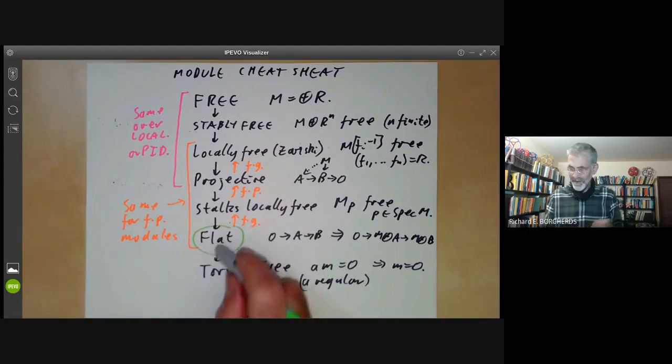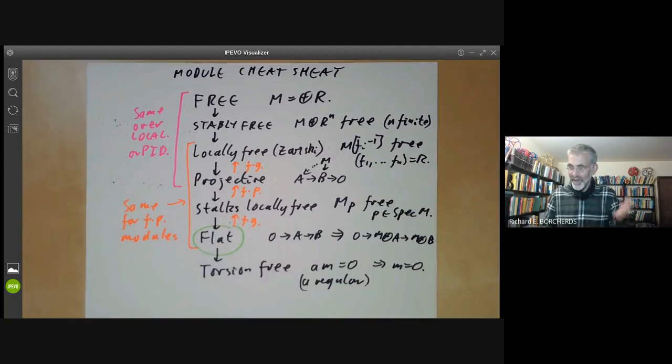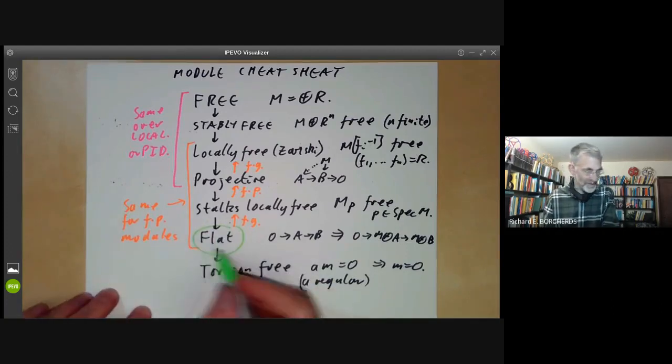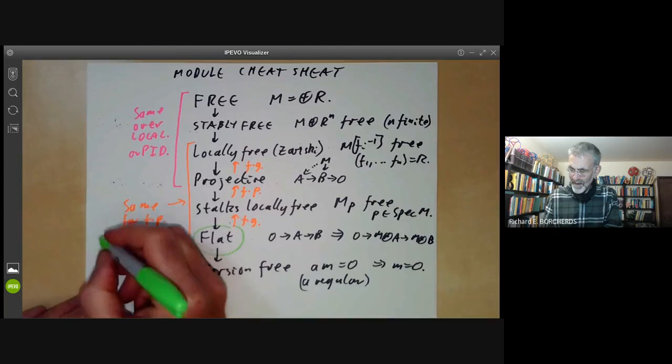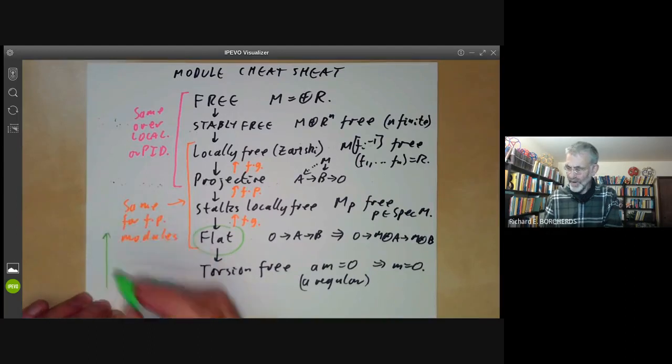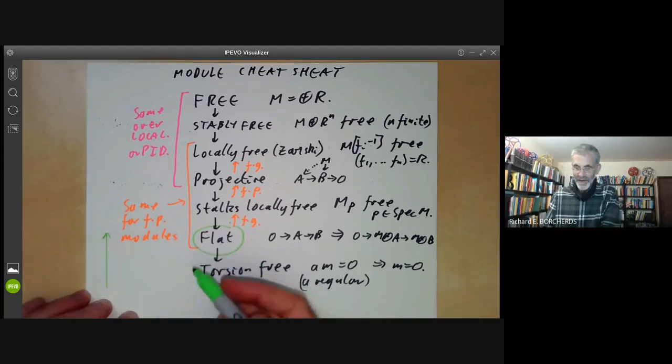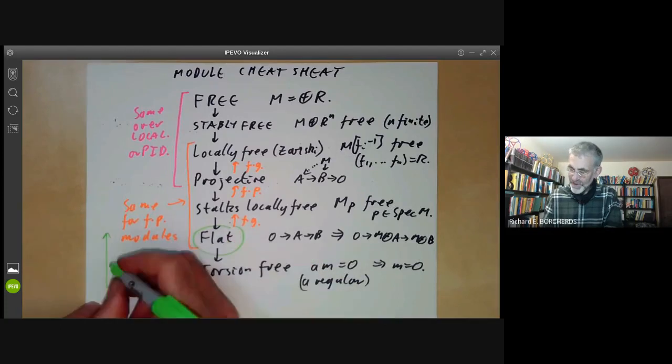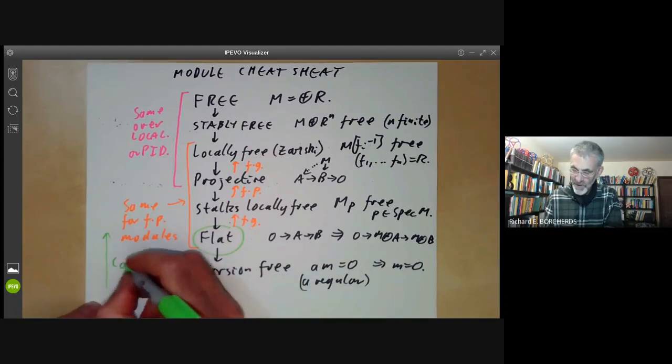It's a bit surprising that flat is so important because it's in fact the most technical and the least intuitive property. In fact, people have been doing commutative algebra for several decades before flatness was even defined. The reason flatness turns out to be so important is that well, in order for a property to be useful, you must have lots of modules with that property. I mean, a property that no modules have is just not very useful. So flat modules and torsion free modules are actually rather common.